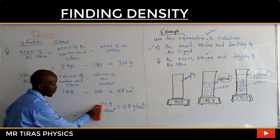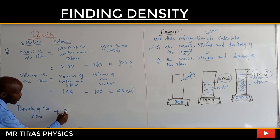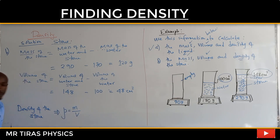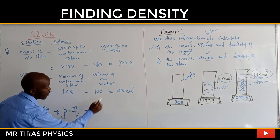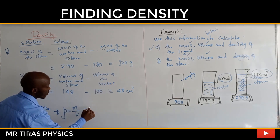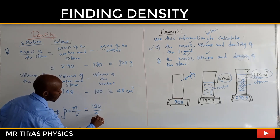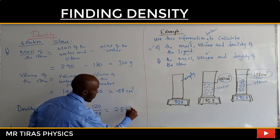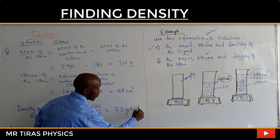Finally, we get the density of the stone. Density of the stone equals mass of the stone over the volume of the stone. The mass is 120 and the volume is 48, so the answer is 2.5 grams per centimeter cubed.